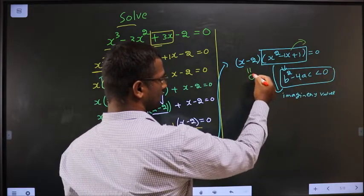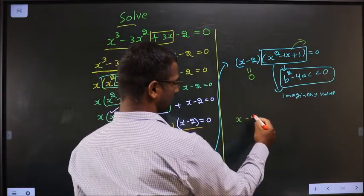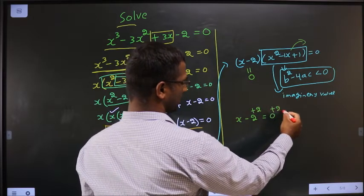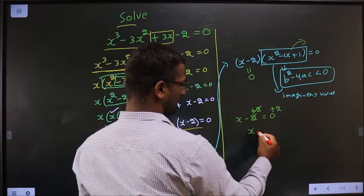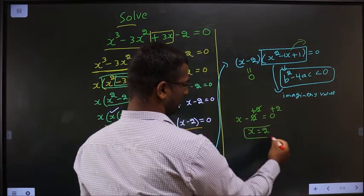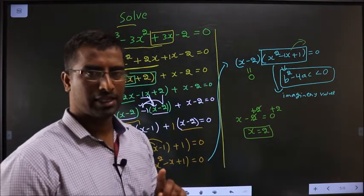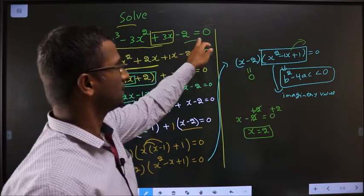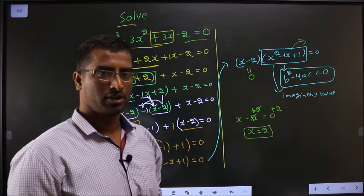So equate only this to 0. Add plus 2 on both sides. This cancels out, x equal to 2. So we get only one real value of x, that is 2 satisfying the equation. Thank you.